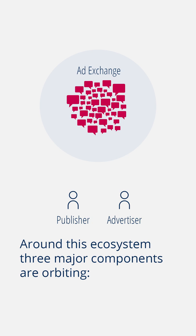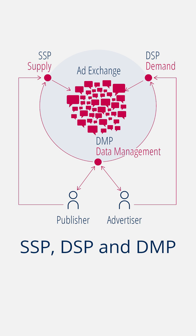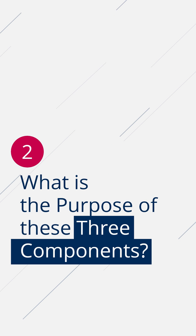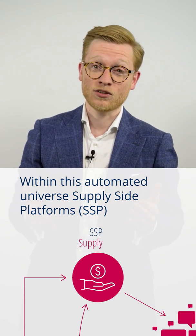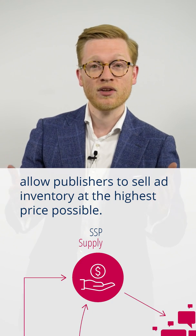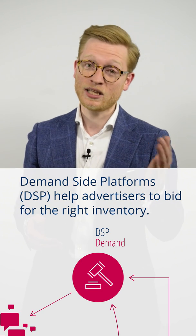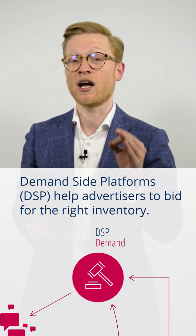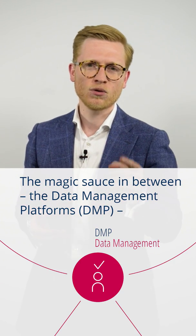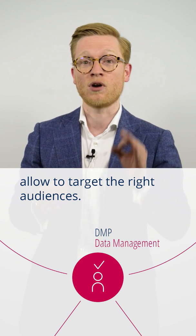Orbiting around this ecosystem are three major components: SSPs, DSPs, and DMPs. Within this automated universe, supply side platforms or SSPs allow publishers to sell the ad inventory at the highest price possible. Demand side platforms or DSPs, on the other hand, help advertisers bid for the right inventory. The magic sauce in between, data management platforms or DMPs, allow targeting of the right audience.